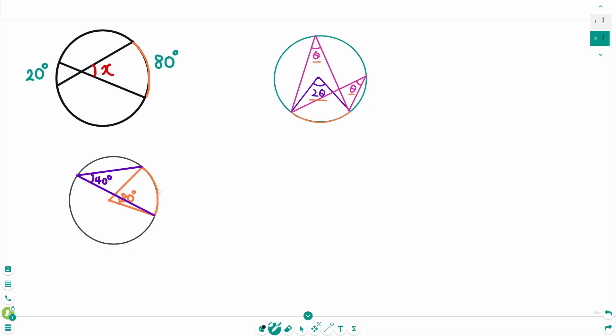By the same arc, that means if we connect these two points then this angle is 40 degrees. Like this.